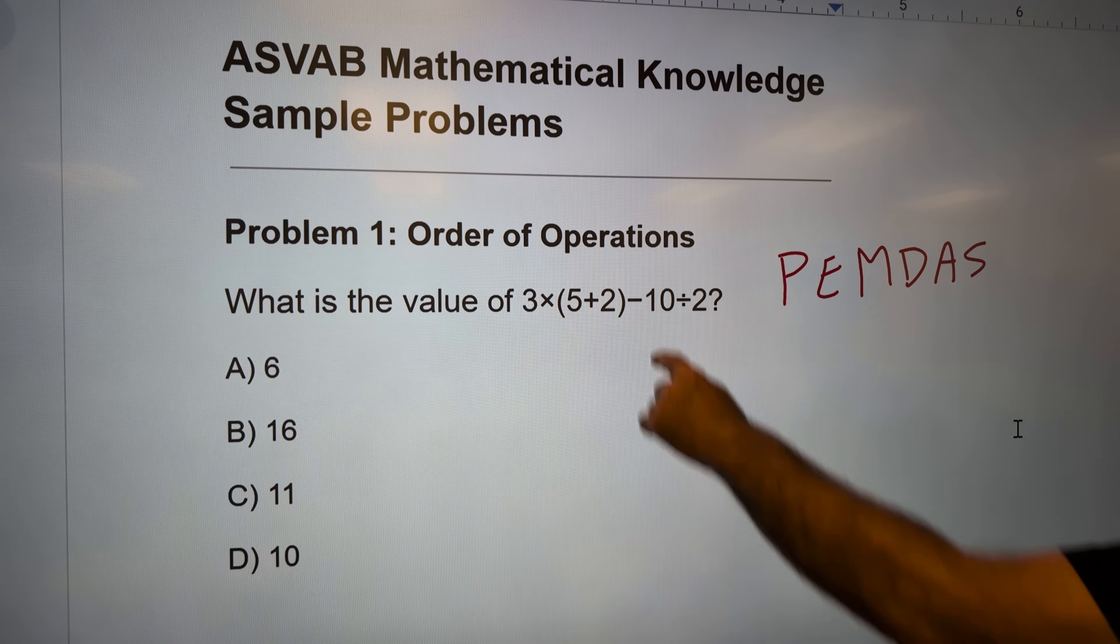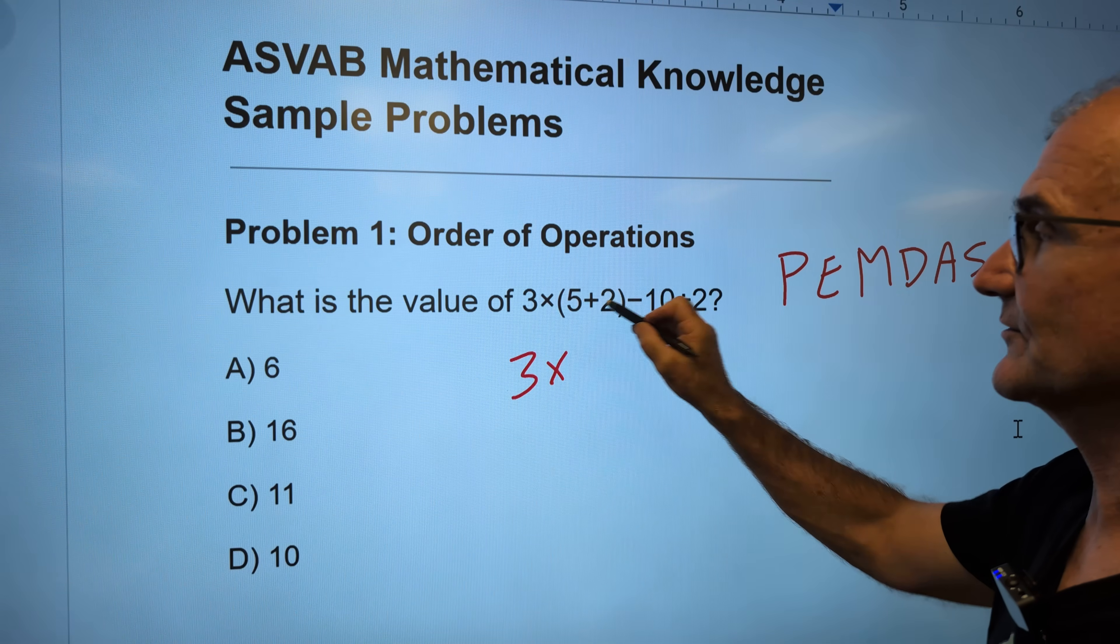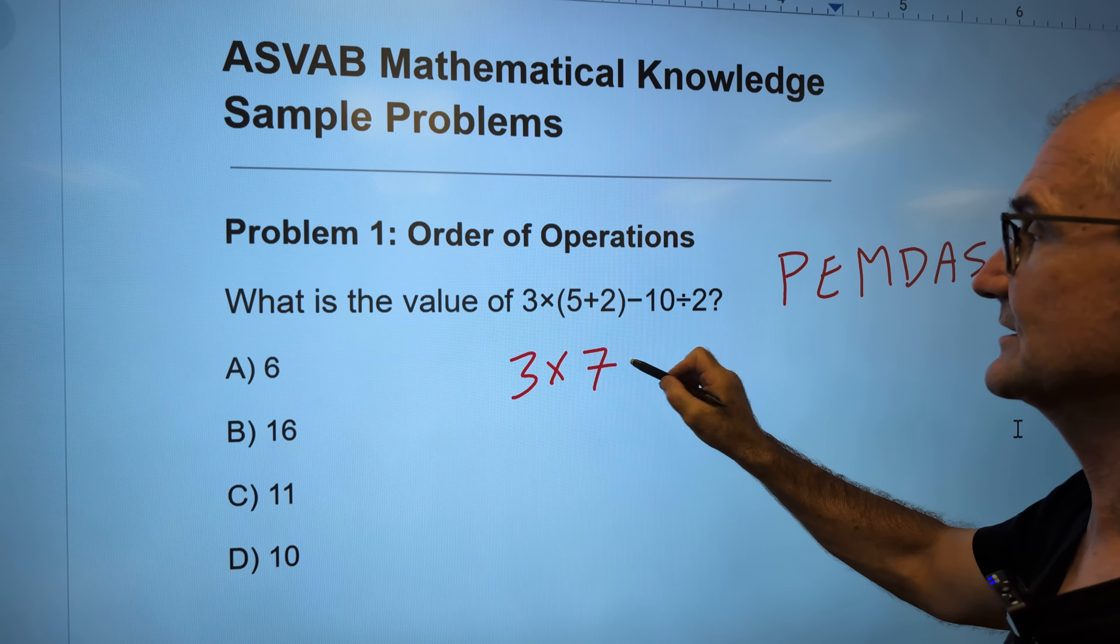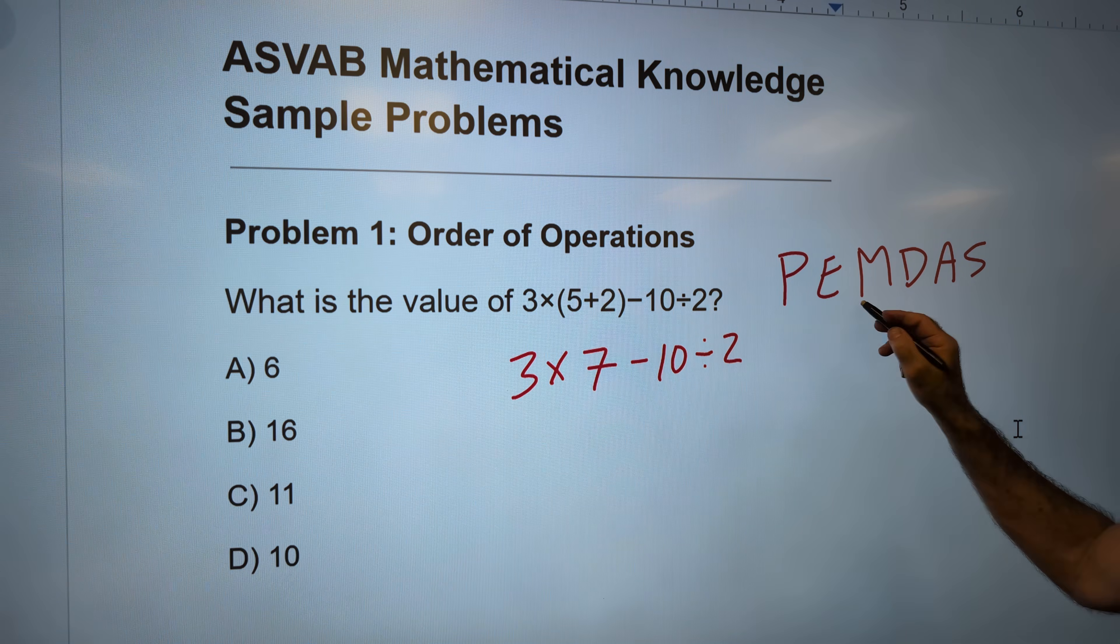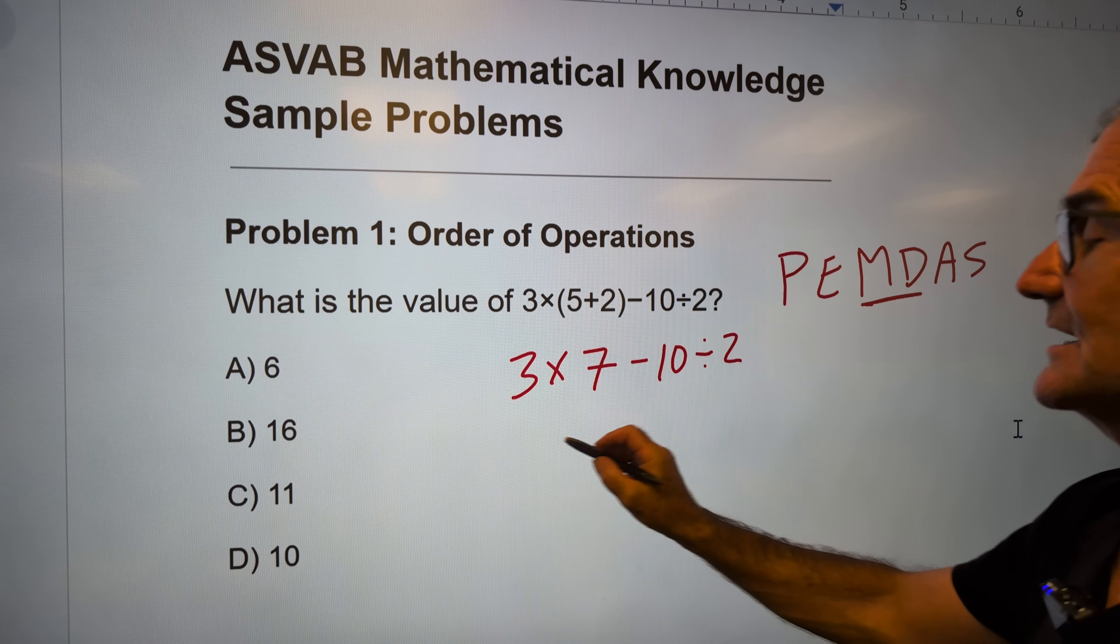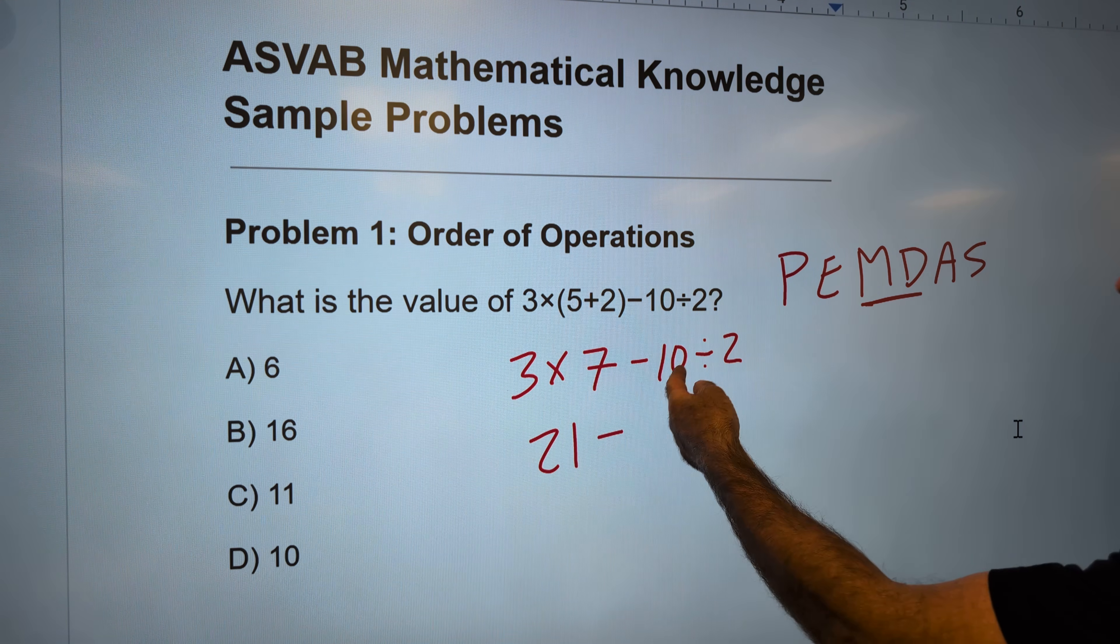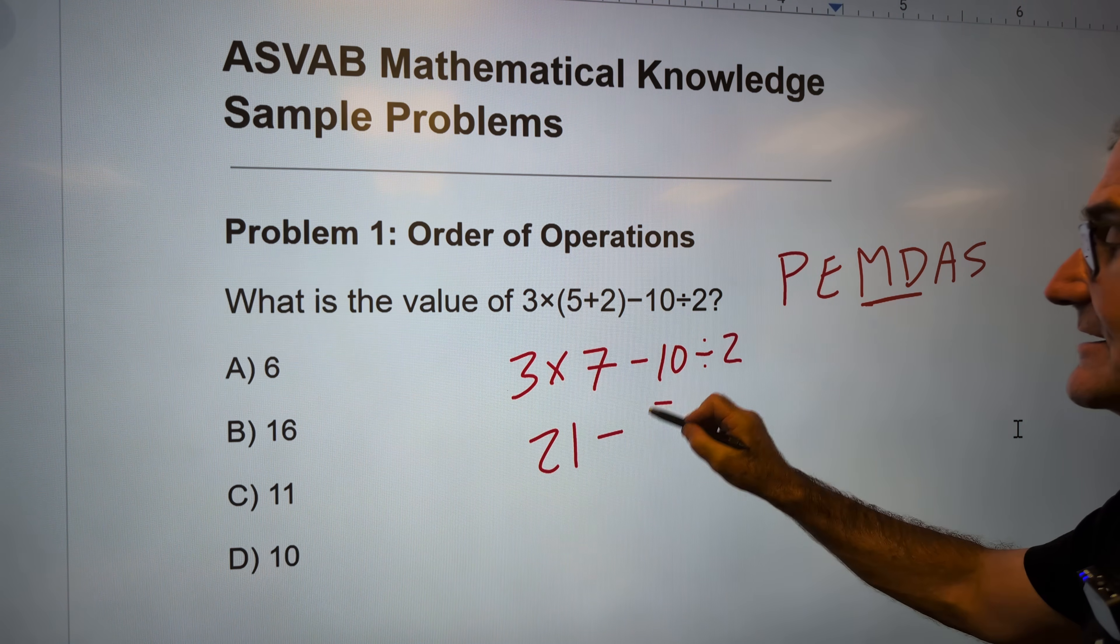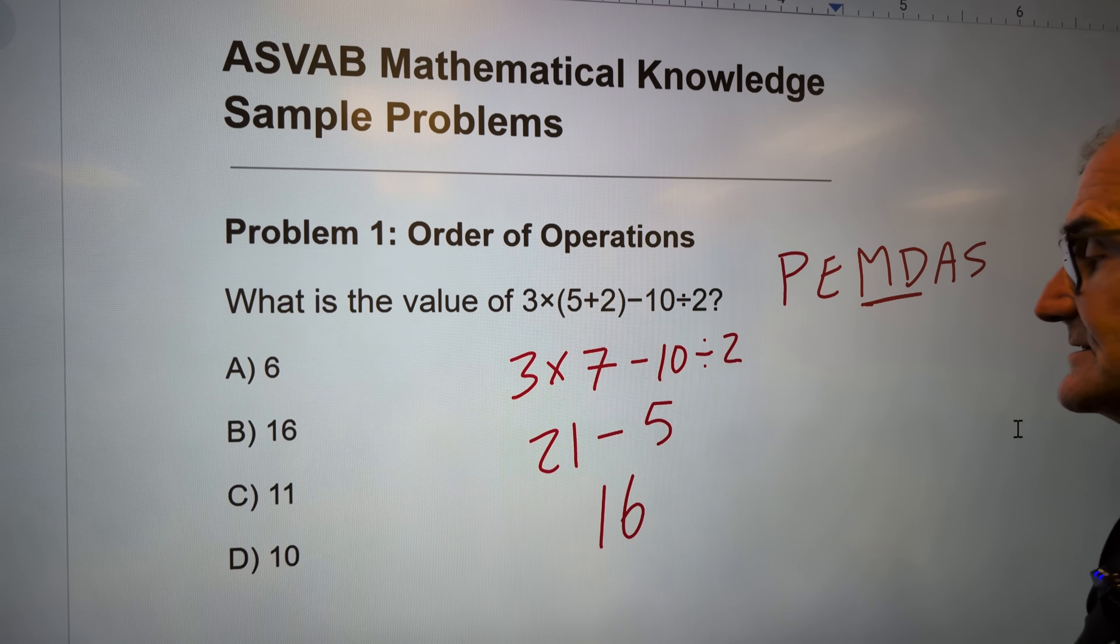So the first thing I have here is parentheses. So I do those first. I have 3×(5+2)=7 minus 10 divided by 2. Now I do multiplication and division from left to right. So 3×7=21. I'm not doing addition, subtraction yet. So that stays there. 10 divided by 2 is 5.